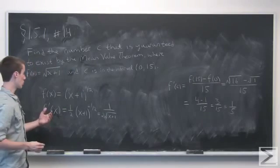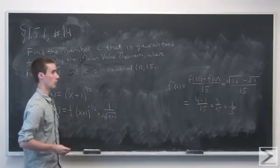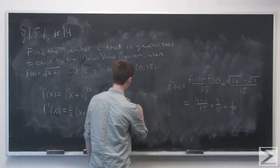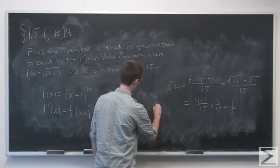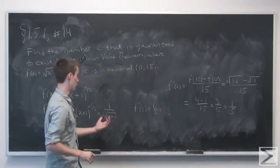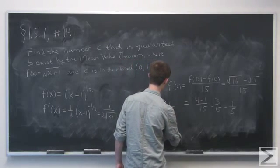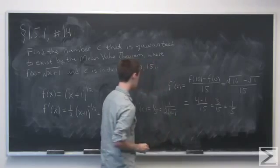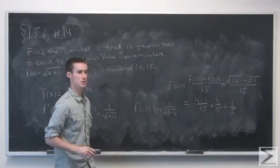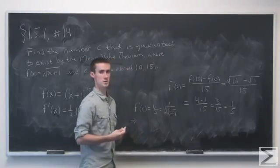The question is: what is the value of x, which we'll call c, such that f prime of c equals 1 fifth? We know that f prime of c equals 1 fifth, and on the other hand it's also equal to 1 over 2 times the square root of c plus 1. So now we just solve for c.